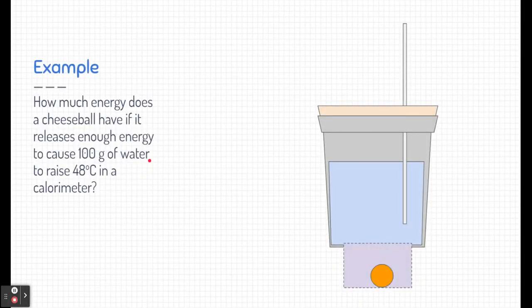Let's take a look at an example and actually work through a problem together. Here, it's asking how much energy does a cheeseball have if it releases enough energy to cause 100 grams of water to raise 48 degrees Celsius in a calorimeter. Remember, a calorimeter uses water to determine the enthalpy of a reaction.